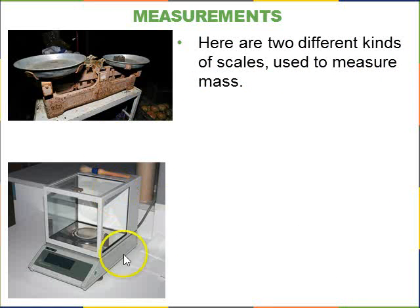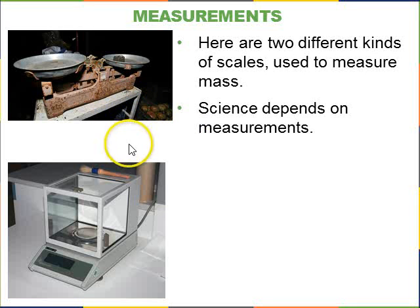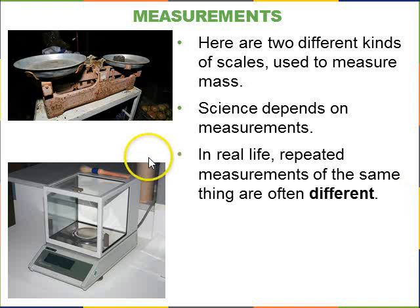Here are two kinds of scales. There's a pan balance and a spring scale, both used to measure mass. We put them here just to remind you that science depends on measurements. You have to do experiments, measure numbers, and compare them with theories in order to make good progress in science.